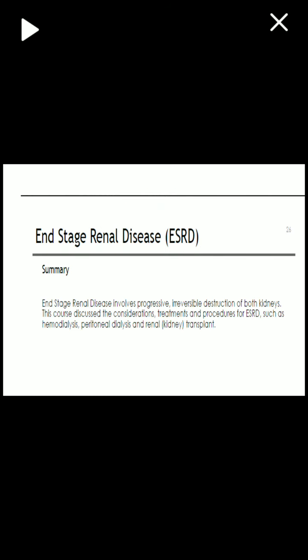In summary, end-stage renal disease involves the progressive, irreversible destruction of both kidneys. This lecture discussed the definition, causes, risk factors, stages, clinical manifestations, diagnosis, and treatment of end-stage renal disease, including hemodialysis, peritoneal dialysis, and renal or kidney transplantation. Thank you.